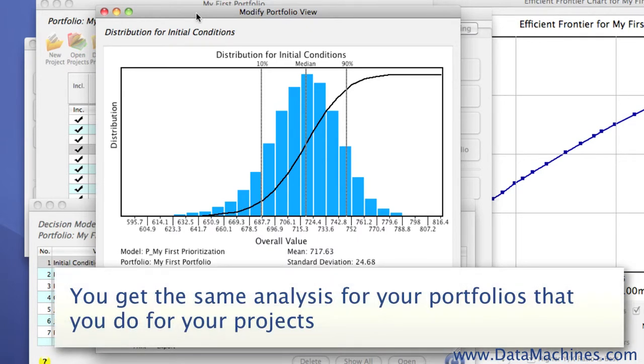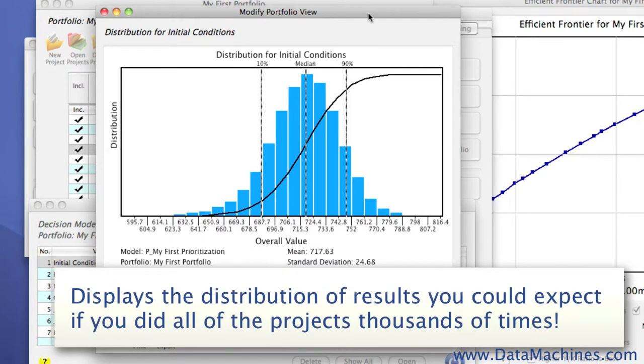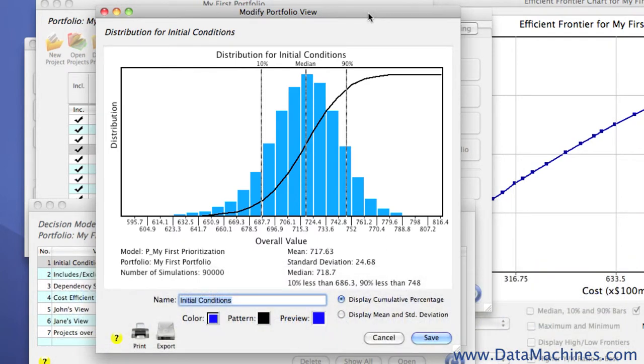That is, the Monte Carlo simulation randomly varies the outcome for each project in the portfolio, just as if you'd actually execute the portfolio thousands of times to give you a full statistical analysis of the entire selected portfolio. You can then use these to compare different portfolios graphically to select the one that's right for your business.